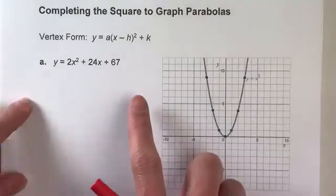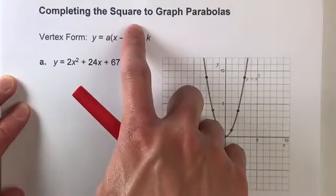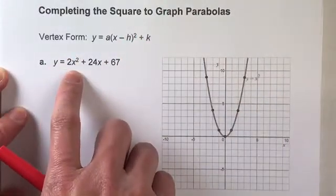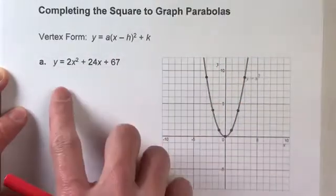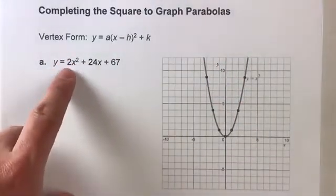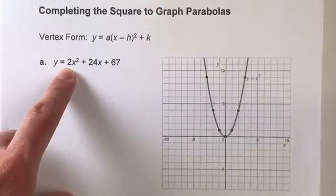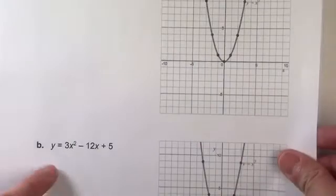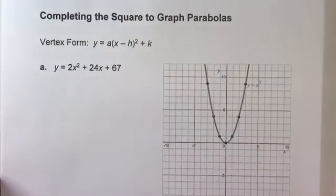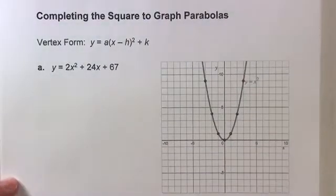Now in a previous video, I showed you how to do this using the completing the square method, but it only worked when there was a 1 in front of x squared. Today, I'm going to show you how to do it when there's an actual coefficient other than 1 in front of x squared. For example, 2, or in my second example, 3. It's a little bit more complicated, but it follows basically the same steps.